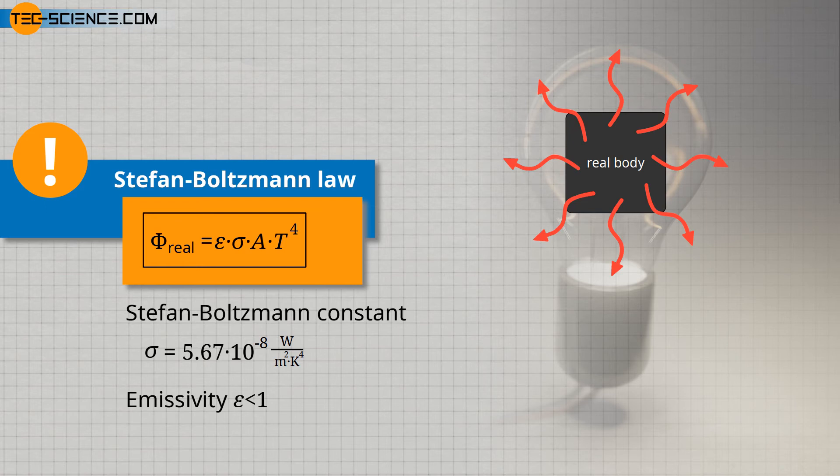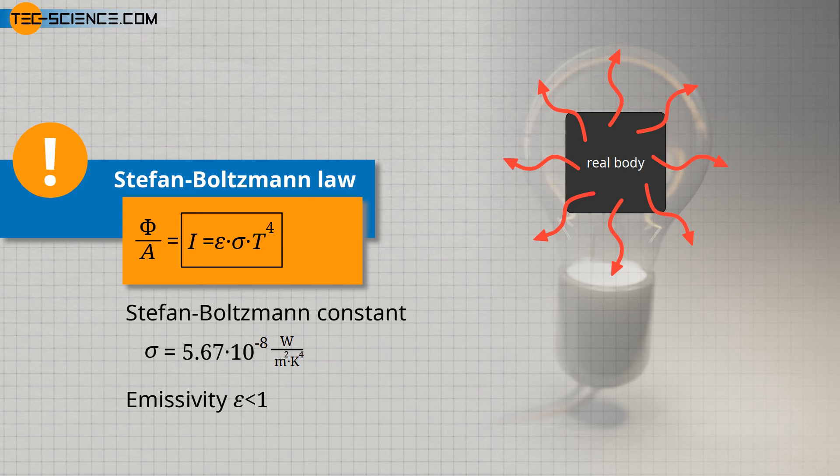If the radiant power of an object is related to its surface area, then one also speaks of the so-called intensity. In a physical sense, intensity means a power surface density. The intensity indicates the magnitude of the radiant power emitted per unit area.